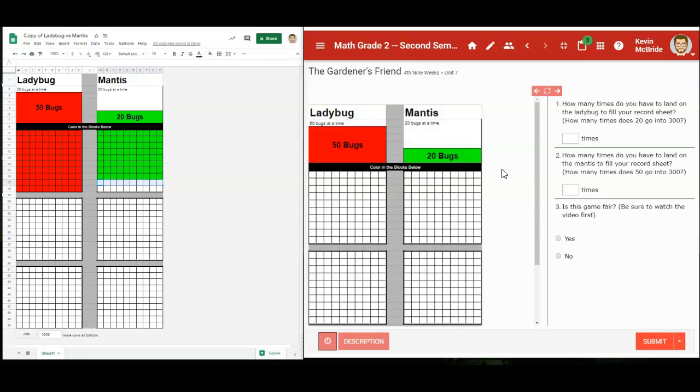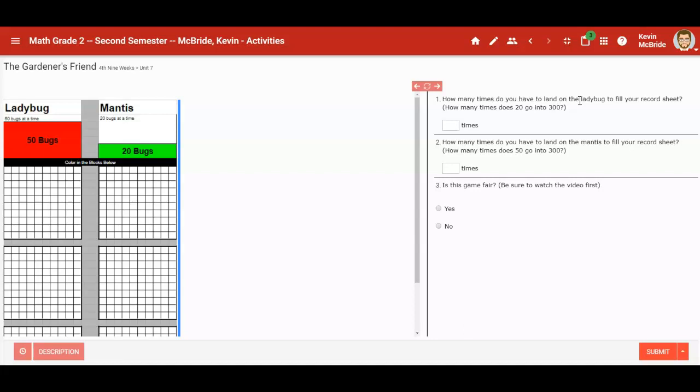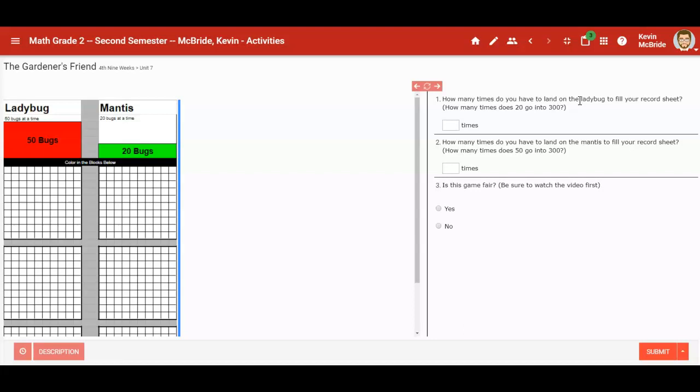After that you're going to hit start and there's a couple questions that have to do with this assignment. This first question is how many times do you have to land on the ladybug to fill in your record sheet? How many times do you have to land on the ladybug to fill in all 300 blocks? You have the same question for the mantis there.